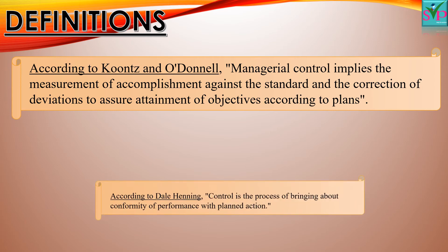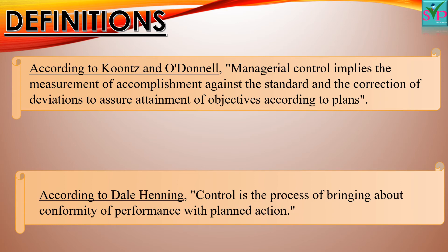The second definition is given by Del Henning. According to him, control is the process of bringing about conformity of performance with planned action. This definition says that controlling consists of verifying whether everything occurs in conformity with the adopted plans, whether employees are following instructions, and whether established principles are being followed. Essentially, under the controlling function, the manager makes sure that all activities are running smoothly without any obstacle so as to achieve the target.